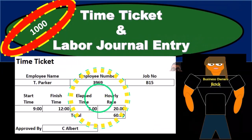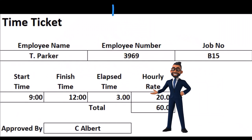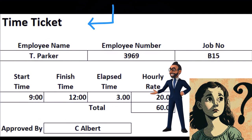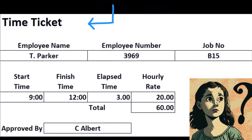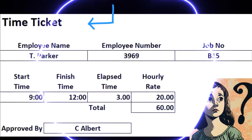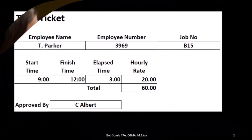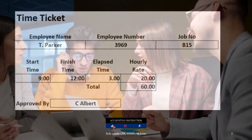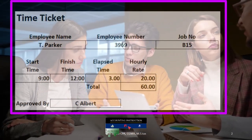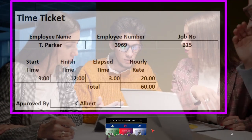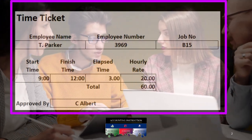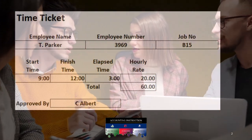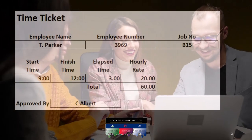When considering a time ticket, we want to keep in mind that when we track the time of workers who are going to be working on a job, we need to be able to apply it to a particular job. The time ticket is going to be used to track the cost so that we know the cost of the job. In a job cost system we would also be tracking this to help us bill the job, but what we're trying to do here is get to the cost of the job with the time ticket.